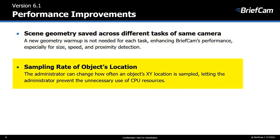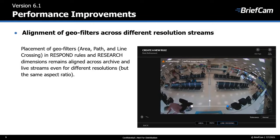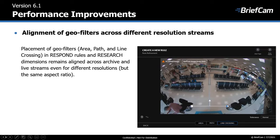We've also made it possible for the administrator to change how often an object's XY location is sampled, which lets the administrator prevent the unnecessary use of CPU resources. Additionally, if the archive stream and the live stream use different resolutions, the placement of geofilters — area, path, and line crossing — set in the respond rules and in research dimensions remains aligned across the archive and live streams. So if I draw a line here, even if the resolution is different in the archived image, this line will remain as is.